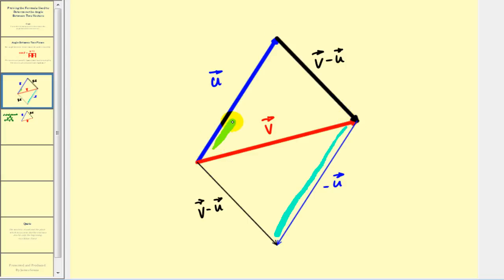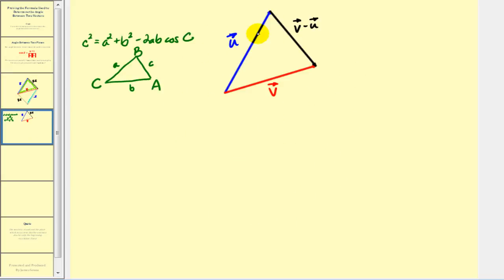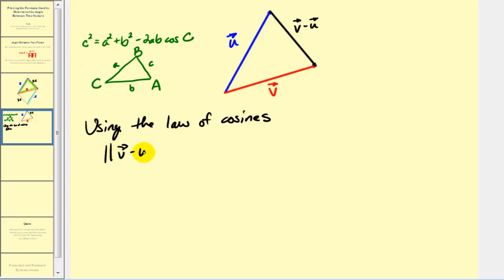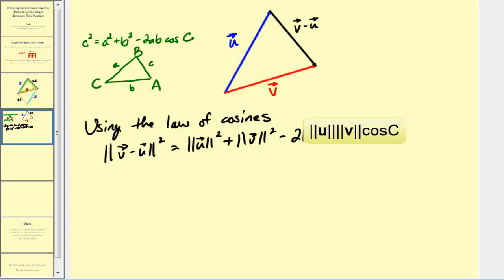For our proof, we're going to use this triangle here. We'll start by applying the law of cosines to this triangle. Here's the sketch of the triangle and a review of the law of cosines. We let the magnitude of v minus u be side c, so the magnitude of vector v minus vector u squared equals the magnitude of u squared plus the magnitude of v squared, minus two times the magnitude of u times the magnitude of v times cosine c. Cosine c represents the angle between the two vectors. We'll call this equation one.